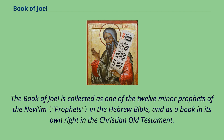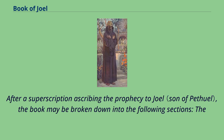The Book of Joel is collected as one of the twelve minor prophets of the Nevim in the Hebrew Bible, and as a book in its own right in the Christian Old Testament. After a superscription ascribing the prophecy to Joel, the book may be broken down into the following sections.